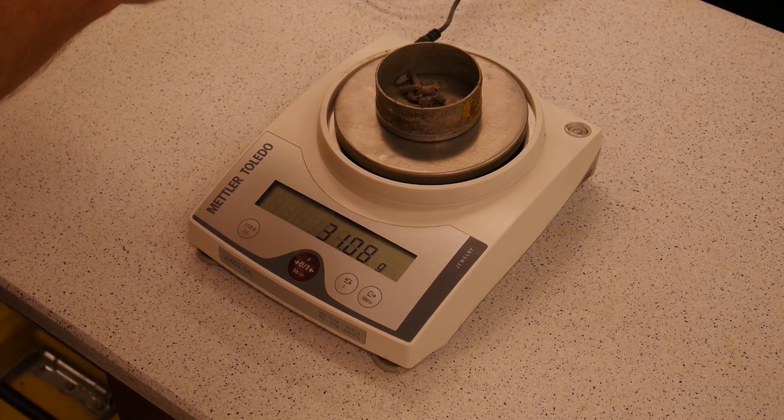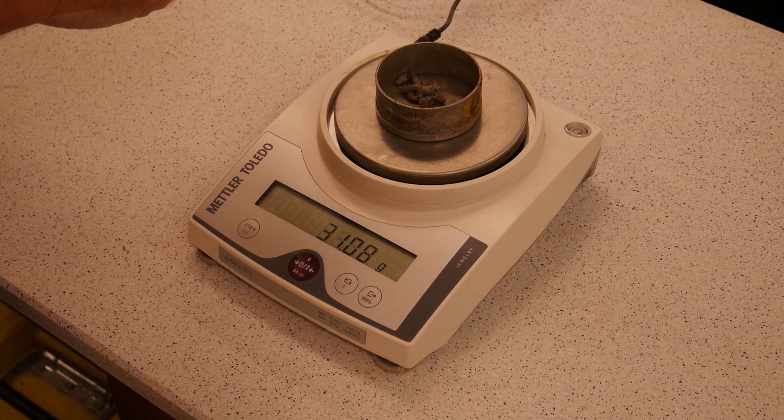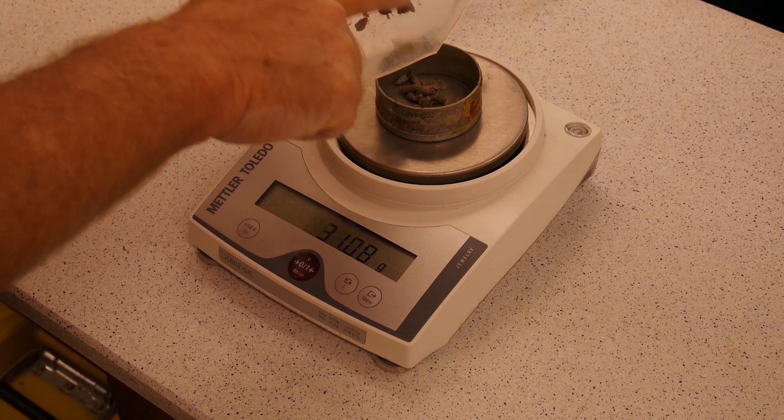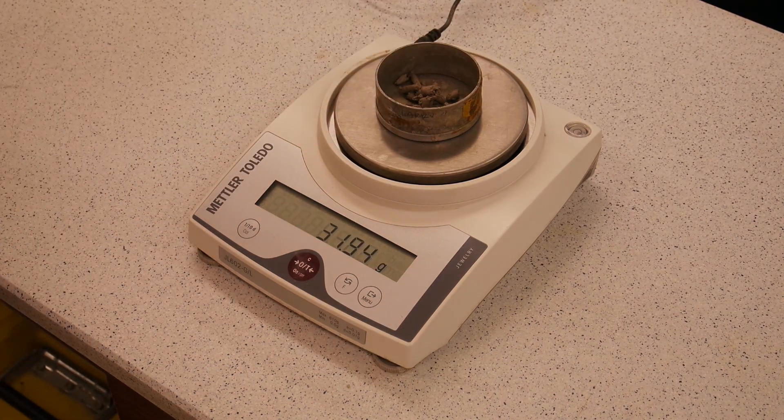We will then place a sample in the drying tin and get a weight and place it in the oven. We will do this a minimum of two samples to make sure we are consistent.